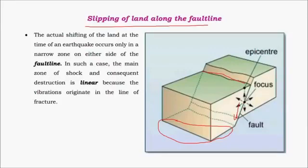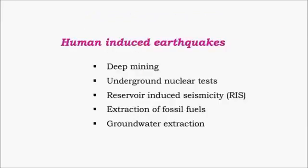Sometimes fault-line earthquakes can be of very high intensity causing huge destruction. Human-induced earthquakes are mainly due to deep mining, underground nuclear tests, reservoir-induced seismicity, extraction of fossil fuels causing voids in the earth's crust, and extensive groundwater extraction. Most human-induced earthquakes are less significant compared to natural earthquakes.